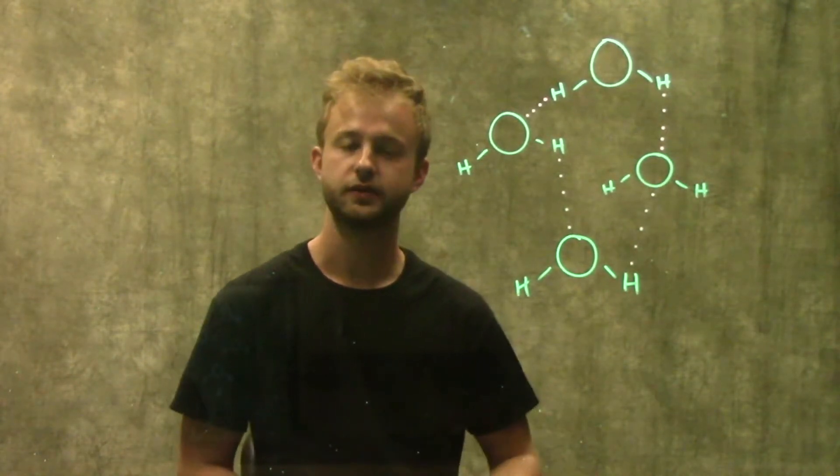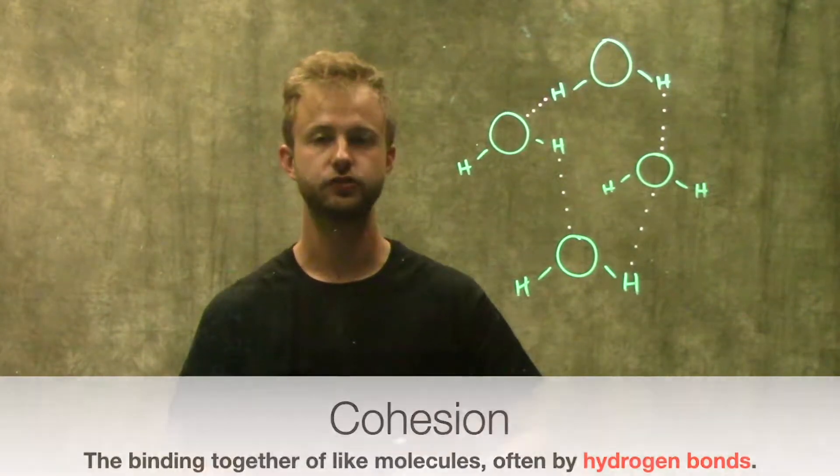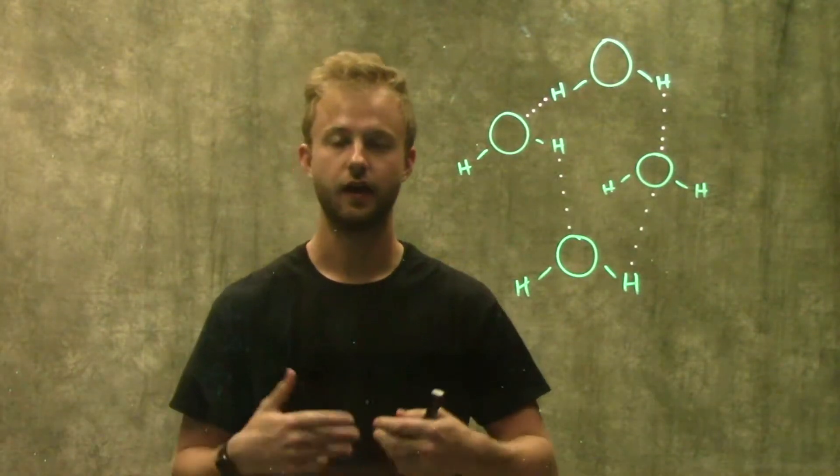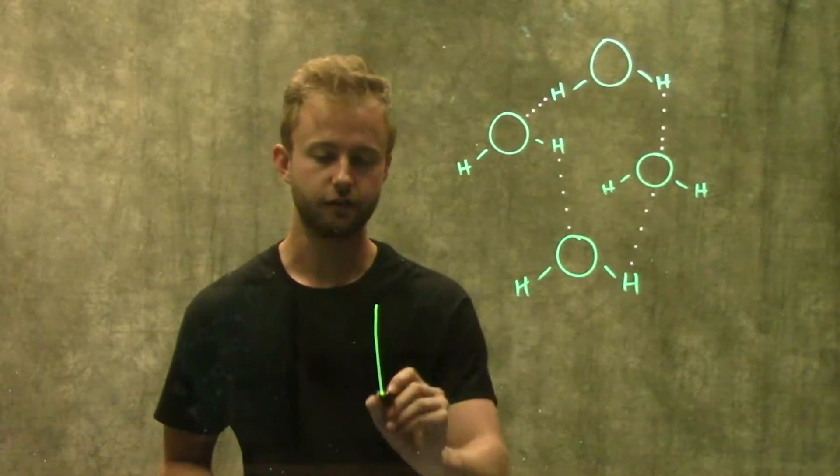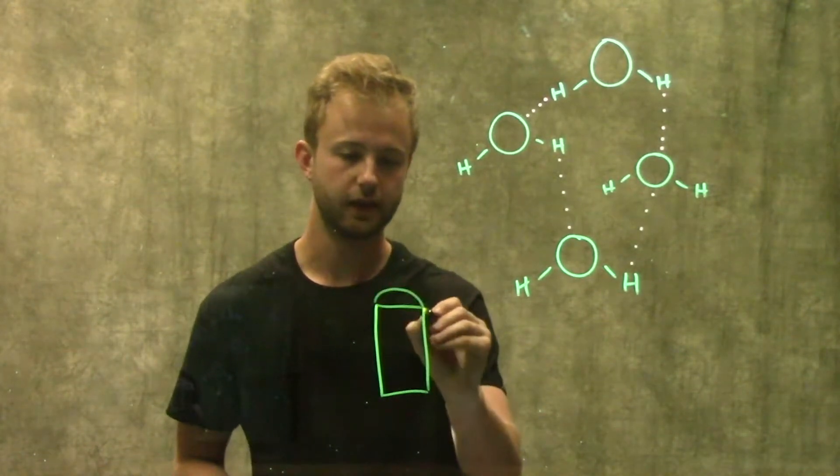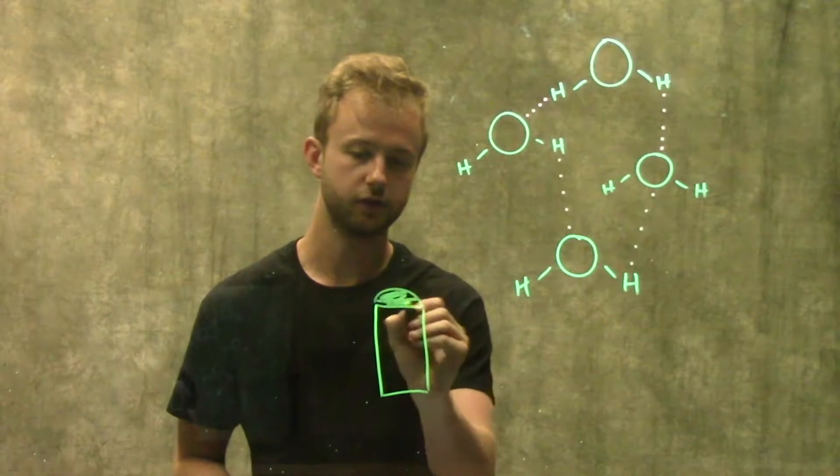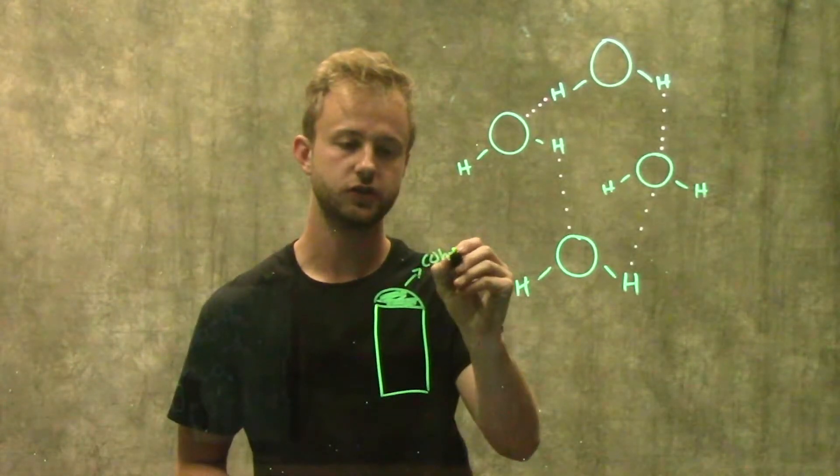The first of those properties is cohesion. Cohesion is the ability of water molecules to stick to one another and to maintain that interaction. A real world example of this would be if you fill a glass of water all the way to the top and then that little dome of water that forms over the top, which is surface tension. That's a result of cohesion.